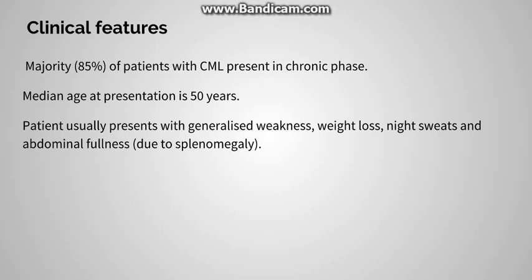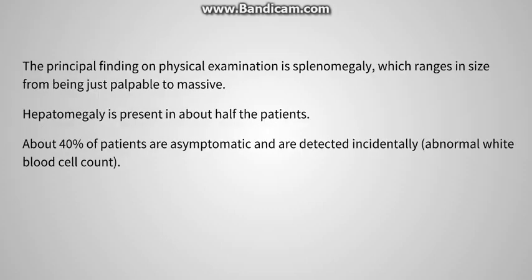There are three stages in which a patient can present: the chronic phase, the accelerated phase, and blast crisis. Majority of patients present in the chronic phase; the median age is around 15 years. Patients present with vague features like weakness, weight loss, and abdominal fullness, which is due to splenomegaly — the principal finding on physical examination. Hepatomegaly can also be seen, and many patients are asymptomatic, detected incidentally via routine blood examination showing abnormally high WBC count.